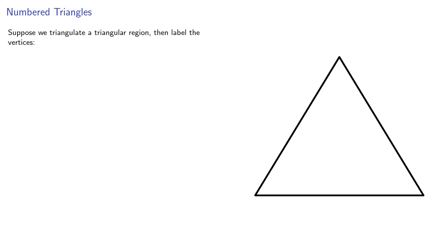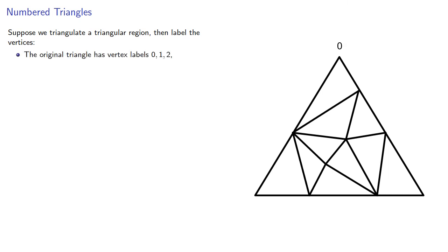Suppose we triangulate a triangular region, then label the vertices. We'll label the original vertices with vertex labels 0, 1, and 2. And then any vertex on the original side must be assigned the value of one of the endpoints.